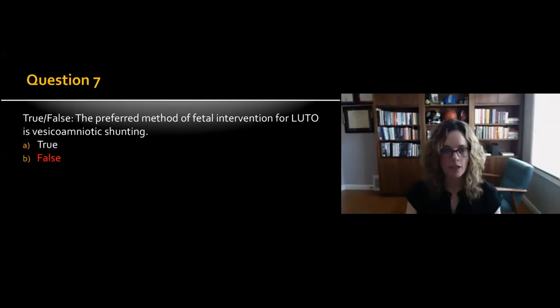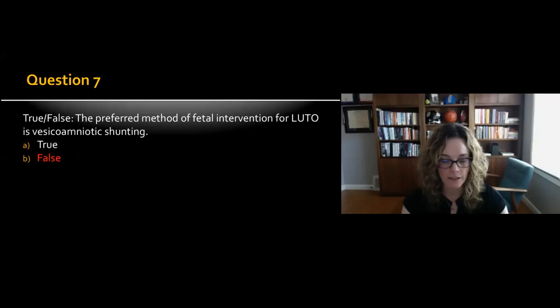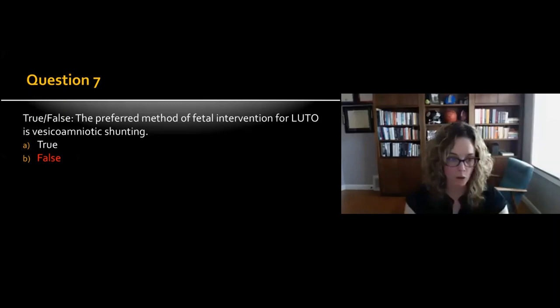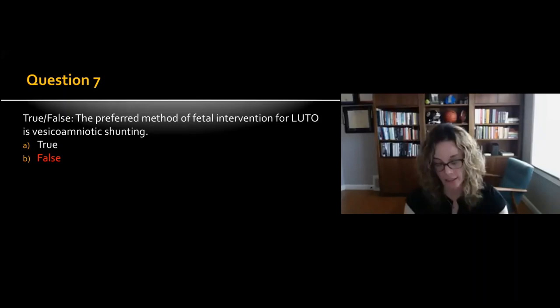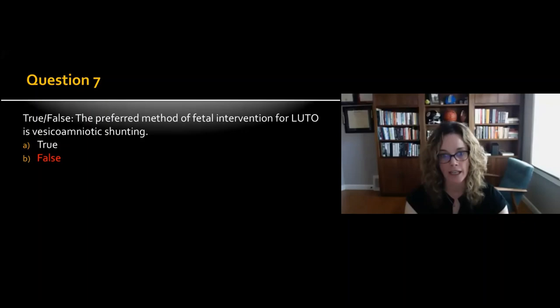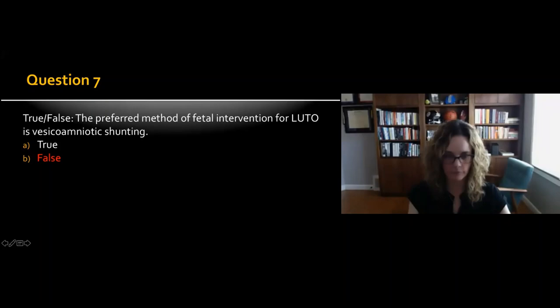For question seven, actually one method isn't particularly preferred over the other — it depends largely on the comfort and expertise of the operator. Vesicoamniotic shunting is technically easier but usually requires amnioinfusion beforehand. Fetal cystoscopy and valve ablation is more technically challenging, but the advantages include confirming the diagnosis and potentially returning to a more physiologic state by ablating the valves.